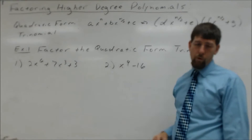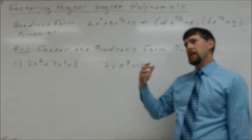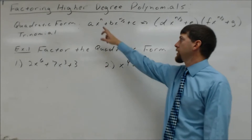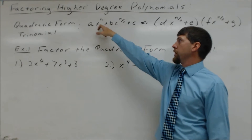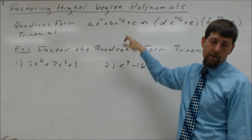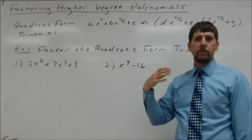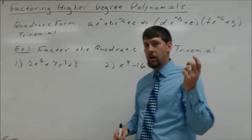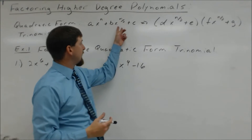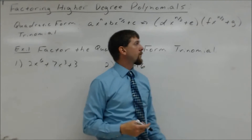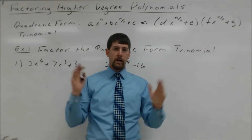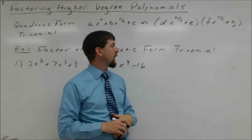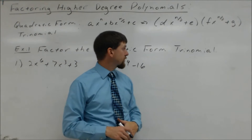The first thing we're going to look at is quadratic form trinomials. It's a polynomial with three terms, laid out just like a quadratic. Instead of having x squared, x, constant, we're going to have a degree, half the degree, and then a constant. When we have it in that form, it's going to break up just like quadratics into a pair of binomials of equivalent degrees — that degree being half of the original. So just like x squared broke out into x and x, if I had x to the fourth, it'd break into x squared and x squared. If I had x to the tenth, it'd be x to the fifth and x to the fifth.